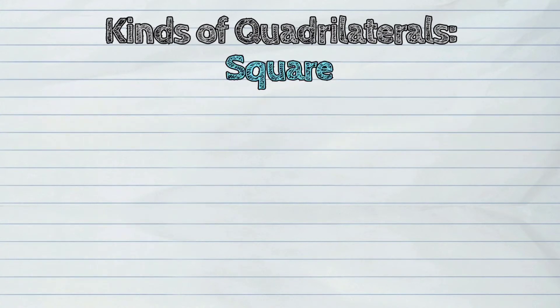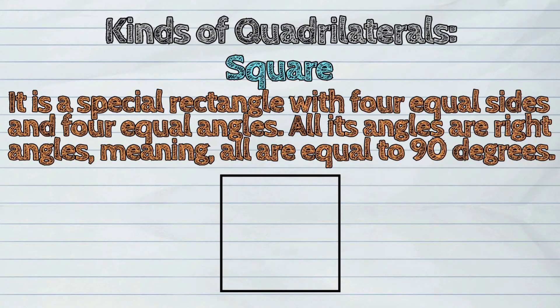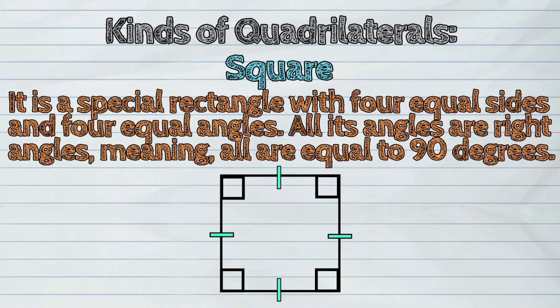Fourth, a square. It is a special rectangle with four equal sides and four equal angles. All its angles are right angles, meaning all are equal to 90 degrees.